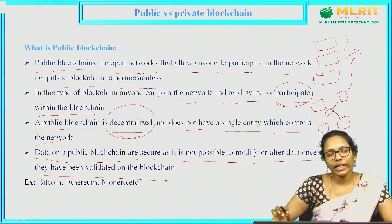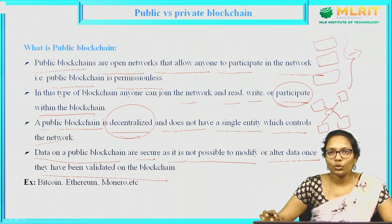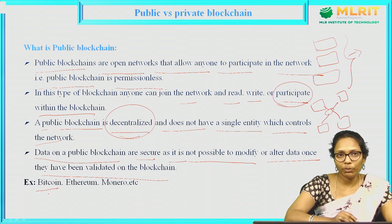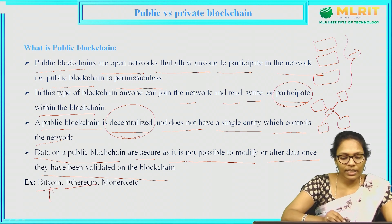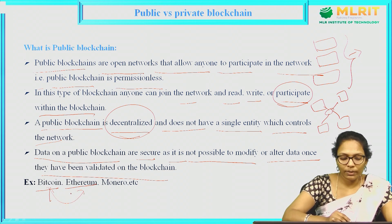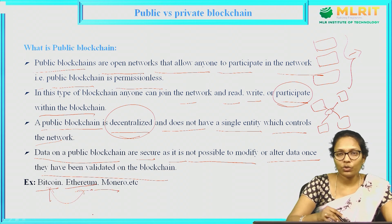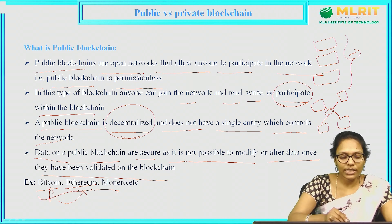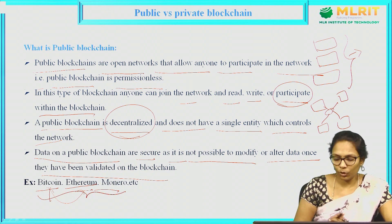Once the blockchain data is validated and added to the blockchain, no one can tamper with it. Coming to the examples for public blockchain: Bitcoin, the first ever cryptocurrency; Ethereum, another cryptocurrency after Bitcoin; and Monero, also one of the cryptocurrencies. All these are examples of public blockchains.